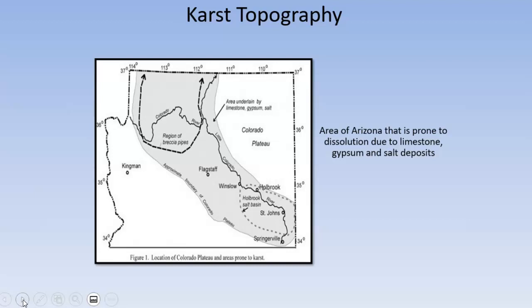Here in Arizona there's actually some karst topography that exists. It's up in the northern part of the state near Flagstaff, where there's limestone at depth. That limestone was dissolved, little caverns have formed, and we get some collapse features where limestone or gypsum or salt deposits that can be easily dissolved show up. So we get some of those features there because of the geology.